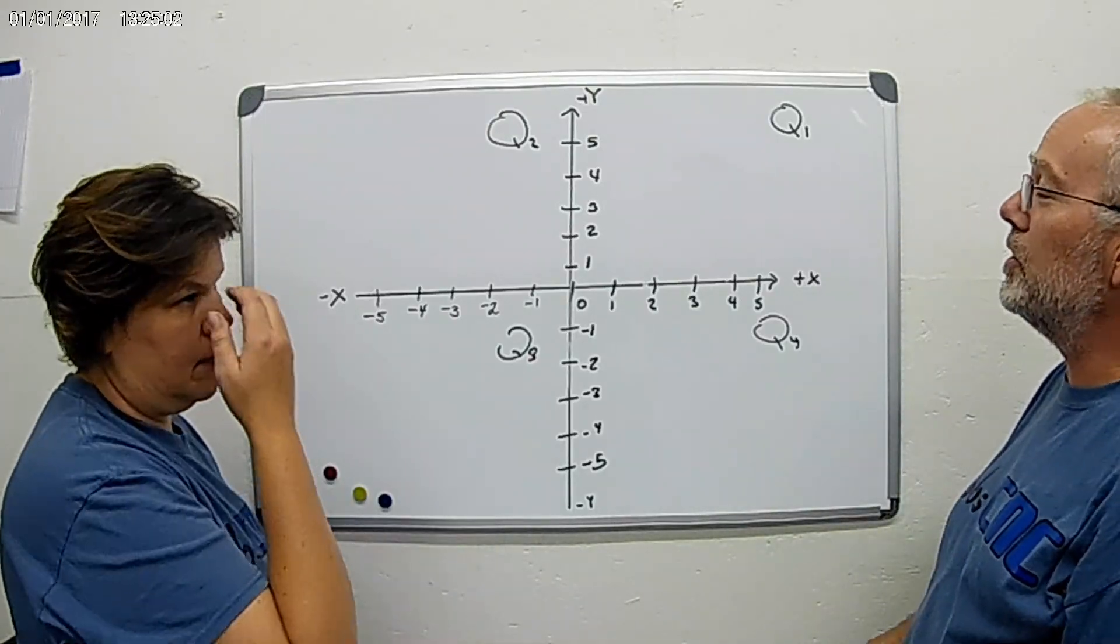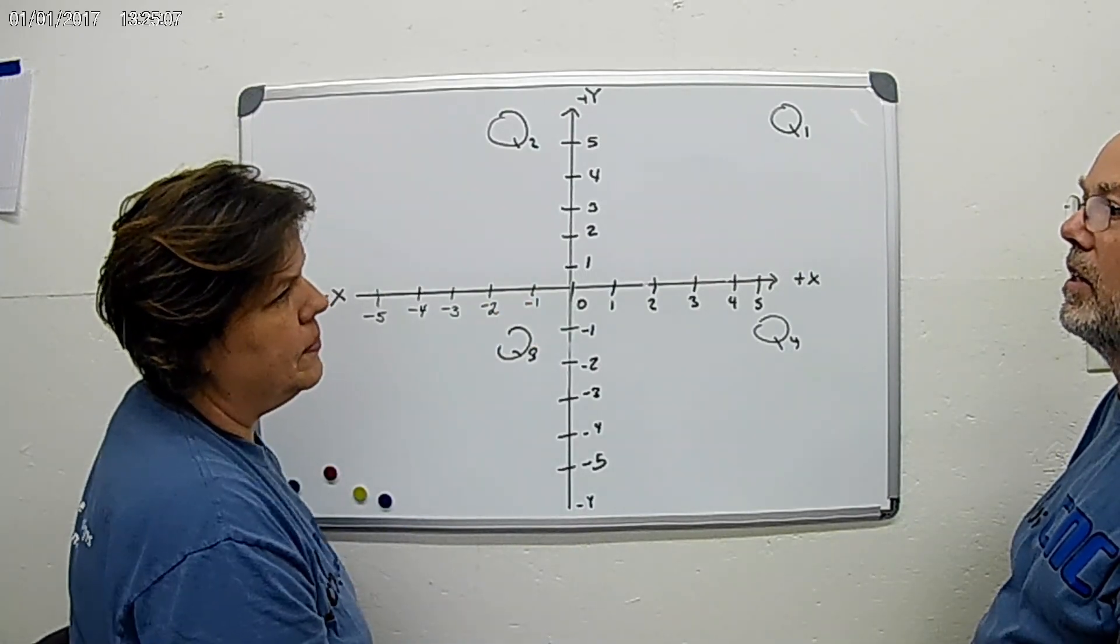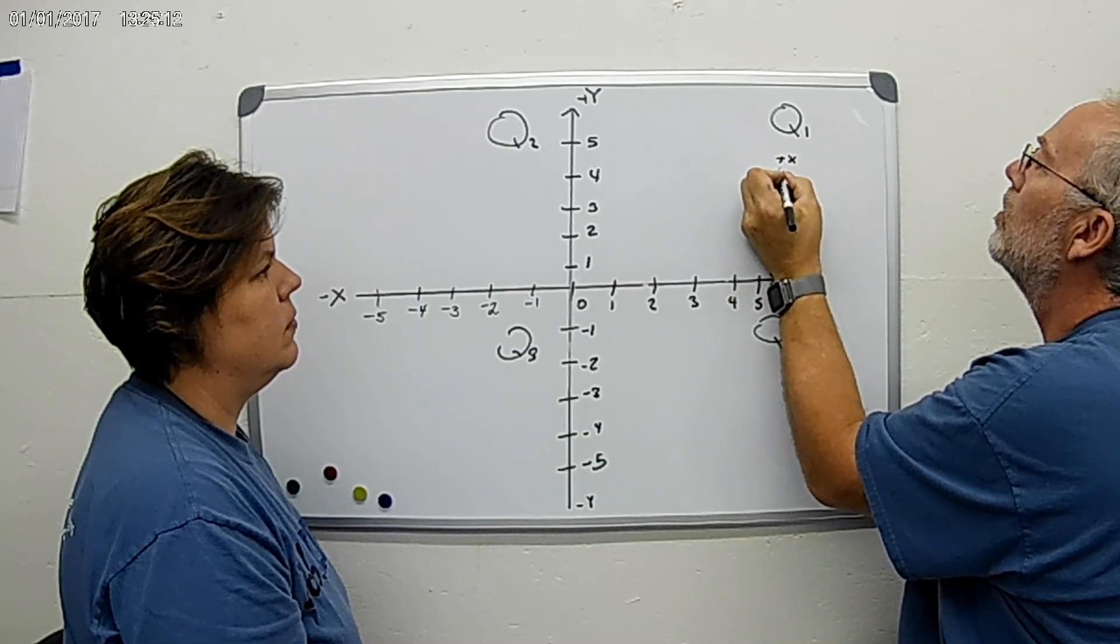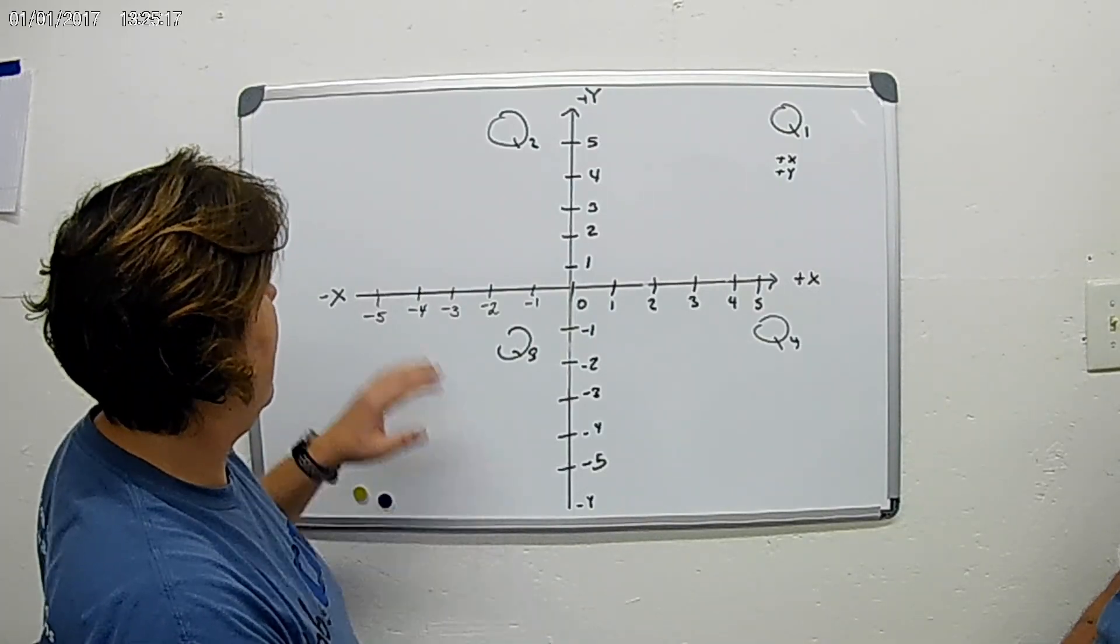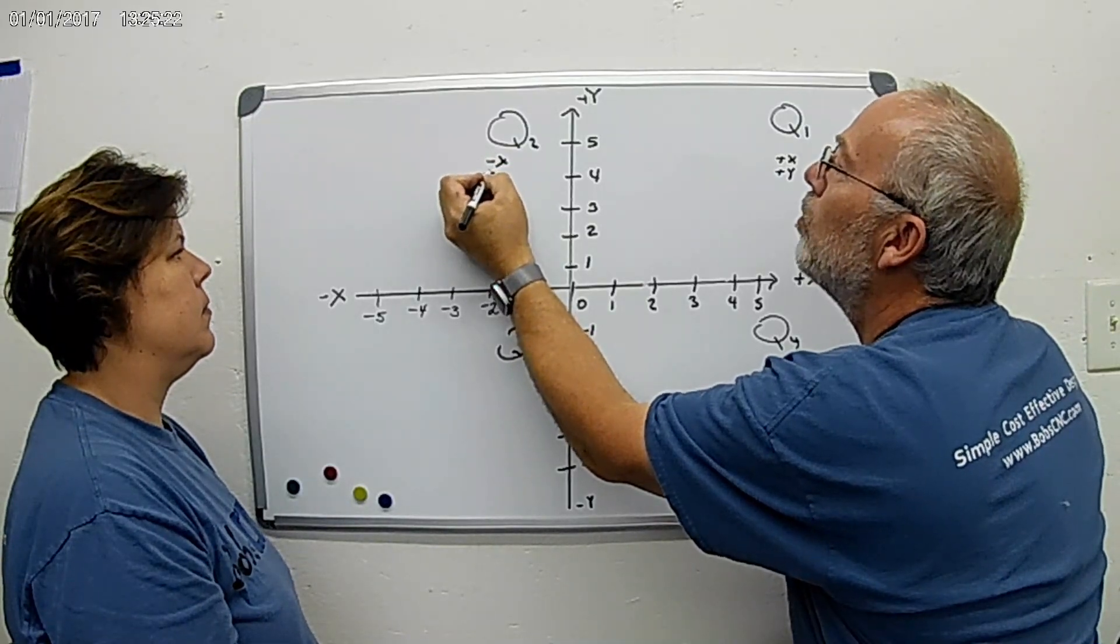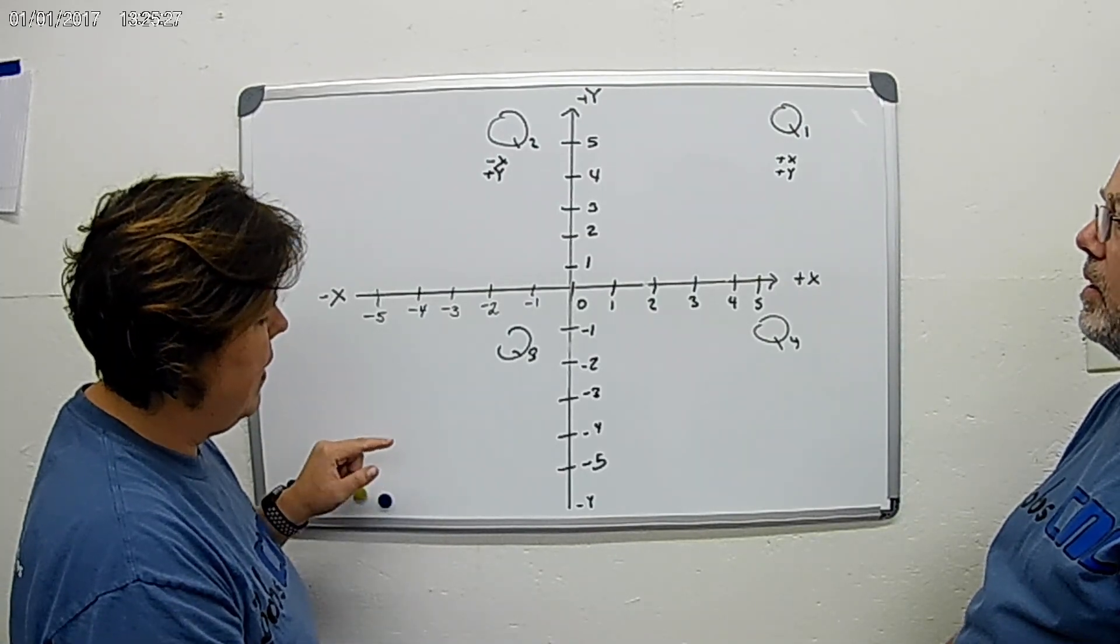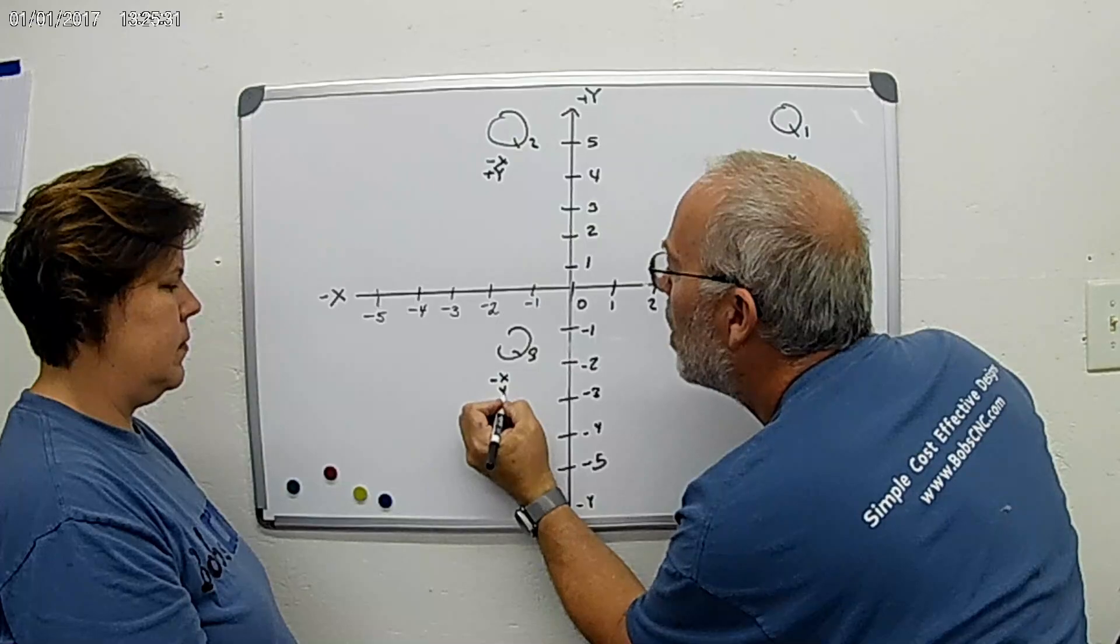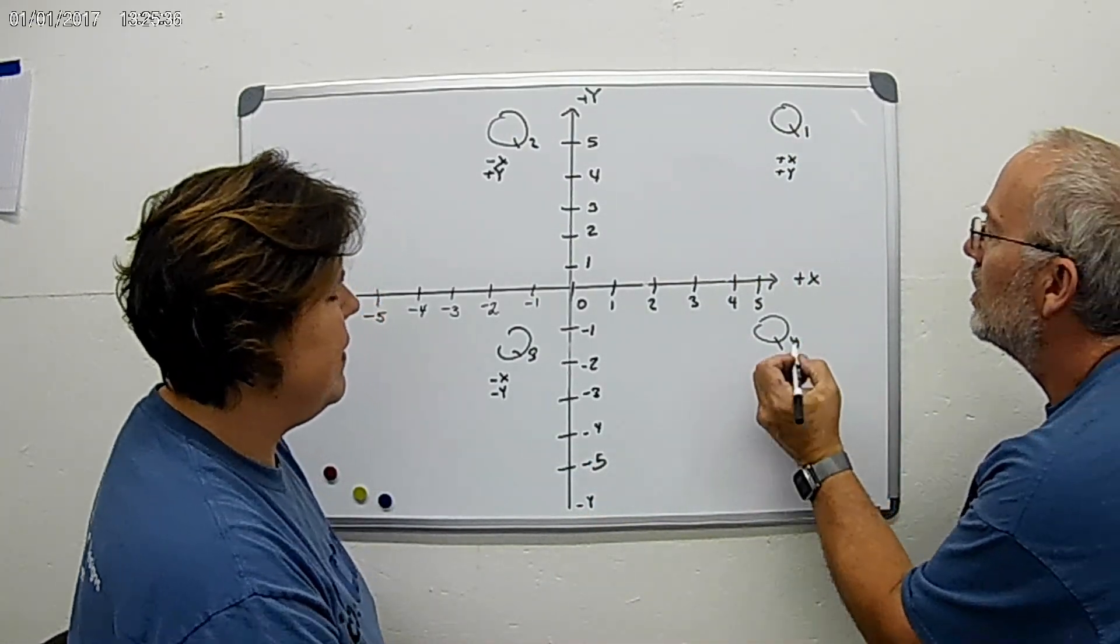Now Kristen, what do you notice about the signs in quadrant one, about the X and the Y? They're both positive. Each is positive when you have X-axis positive and Y-axis positive. What about in quadrant two? So the X is negative and the Y is positive. So X is negative and Y is positive. And quadrant three? The X is negative and the Y is negative. X is negative and Y is negative.